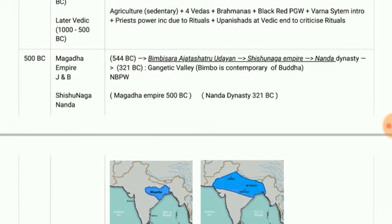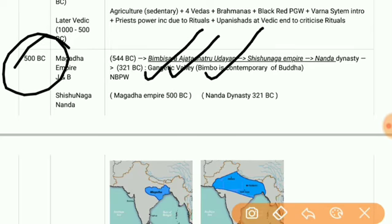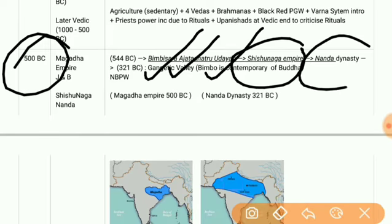Now we have the Magadha Empire. The timeline starts from around 500 BC with the Haryanka dynasty. In the Haryanka dynasty, rulers were Bimbisara, Ajatashatru, and Udayan. Then we have the Shishunaga dynasty, with rulers Shishunaga and Kalashoka. Then the Nanda dynasty, with the ruler Mahapadmananda.